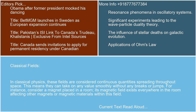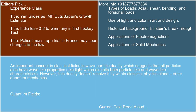In classical physics, these fields are considered continuous quantities spreading throughout space. This means they can take on any value smoothly, without any breaks or jumps. For instance, consider a magnet placed in a room — its magnetic field exists everywhere in the room, affecting other magnets or magnetic materials within this field. An important concept in Classical Fields is wave-particle duality, which suggests that all particles also have wave-like properties, like light which exhibits both particle-like and wave-like characteristics. However, this duality doesn't resolve fully within Classical Physics alone.